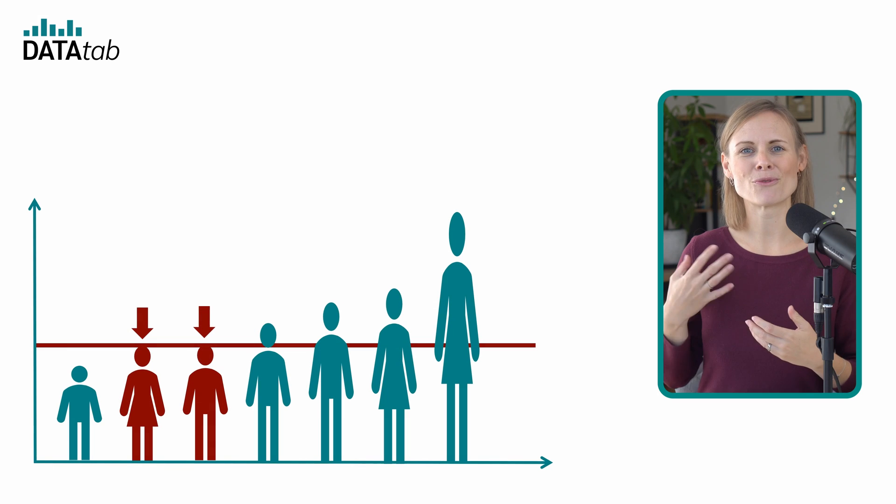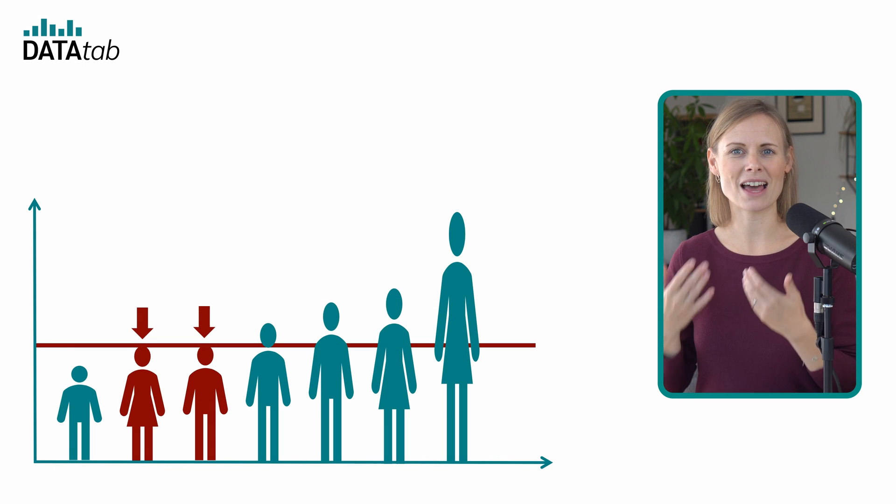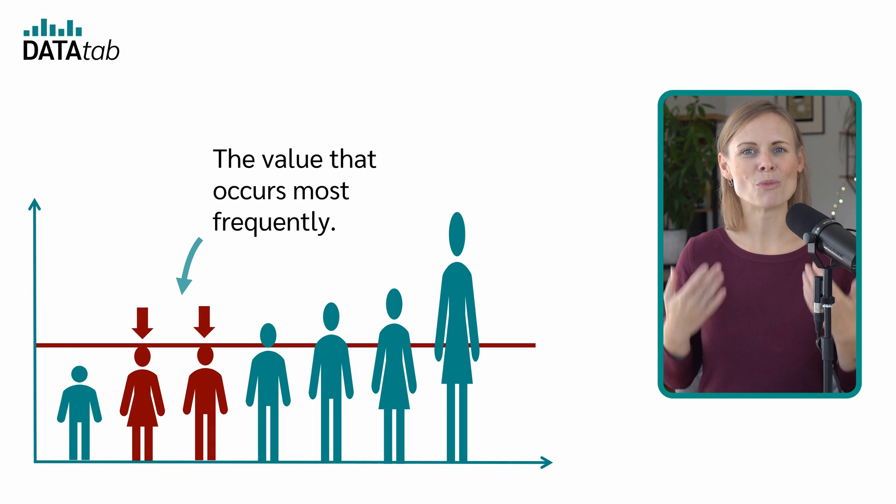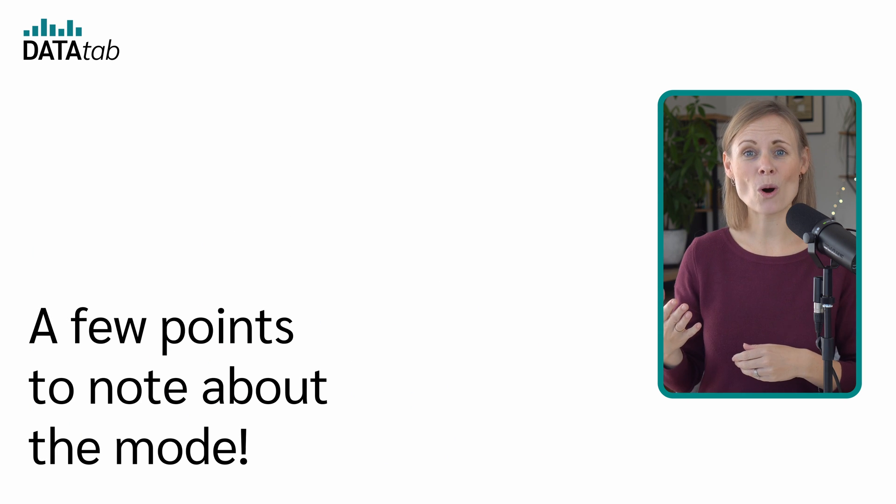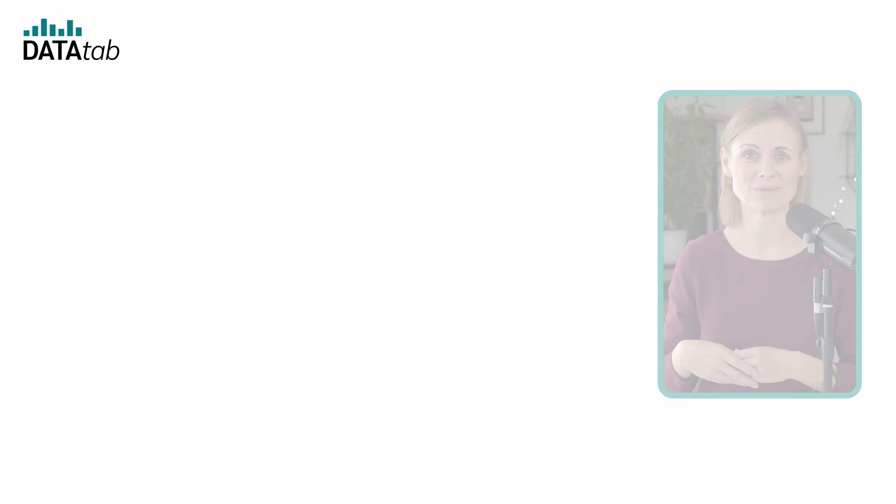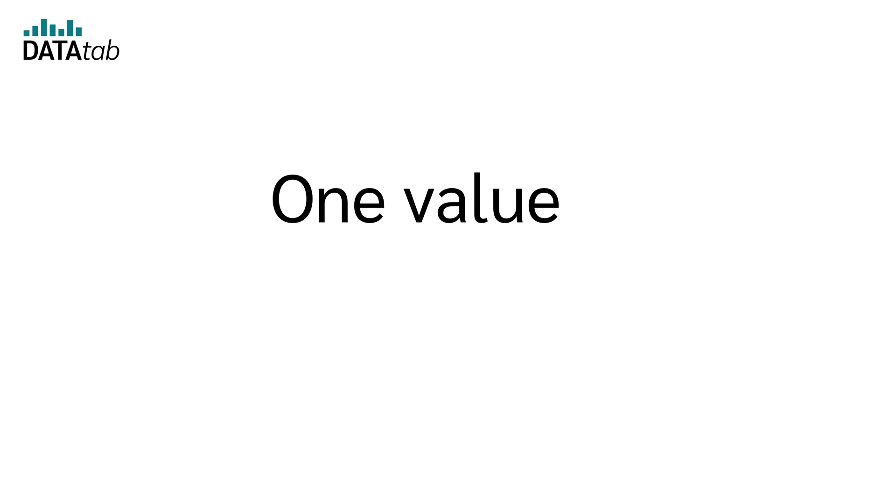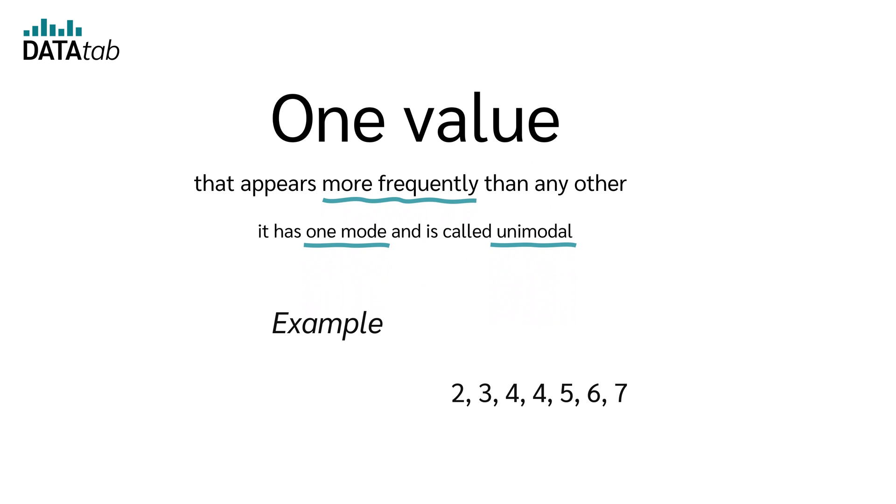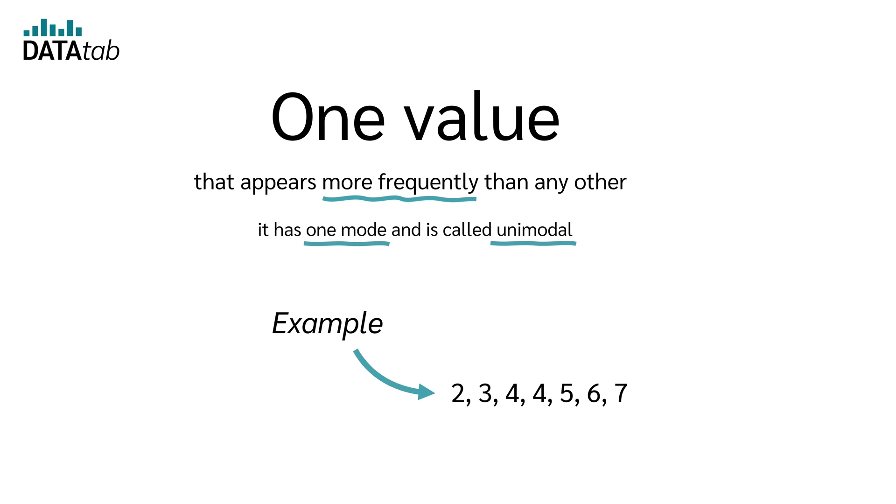Let's continue with the mode. The mode refers to the value or the values that appear most frequently in a data set. A few points to note about the mode: If a data set has one value that appears more frequently than any other, it has one mode and is called unimodal. For example, in the data set 2, 3, 4, 4, 5, 6, 7, the mode is 4.